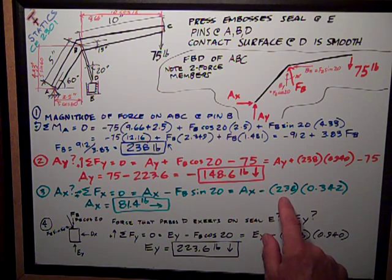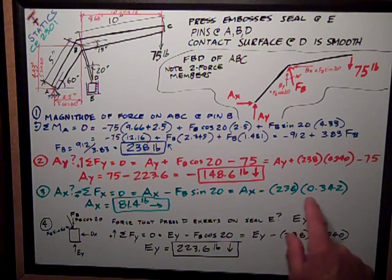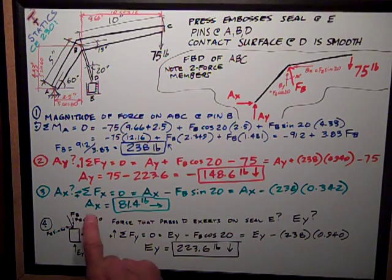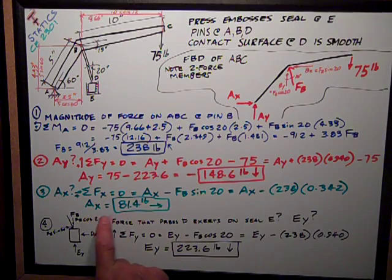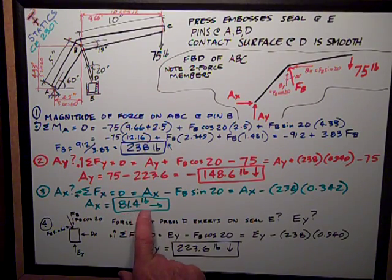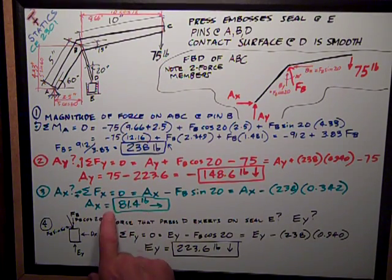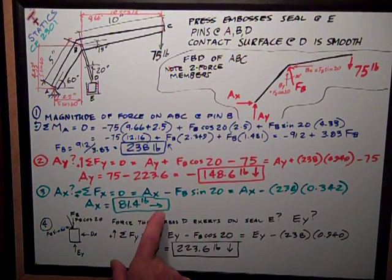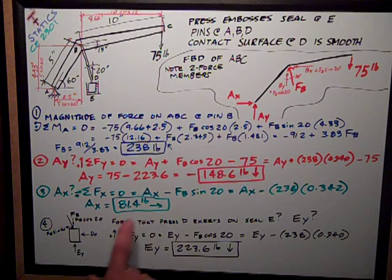AX is equal to 238 FB, times 0.342, which is the sine of 20. So rearranging, I get AX is equal to 81.4 pounds, and it's a positive number. So my assumption to the right is correct. Put a box around that.